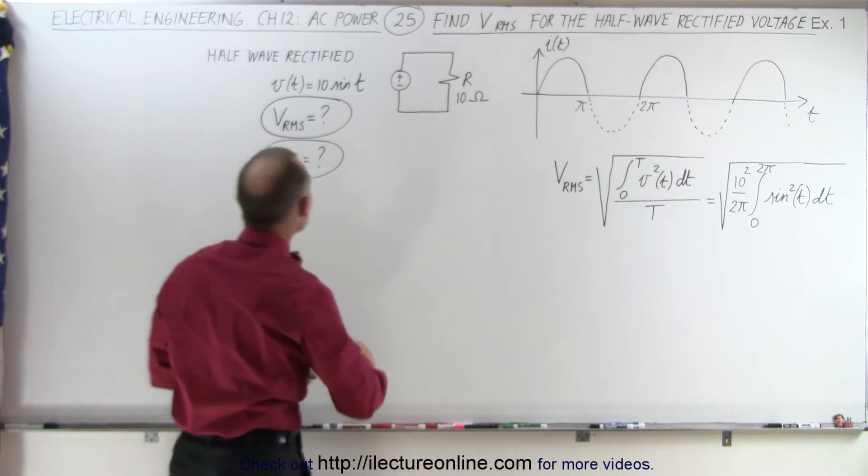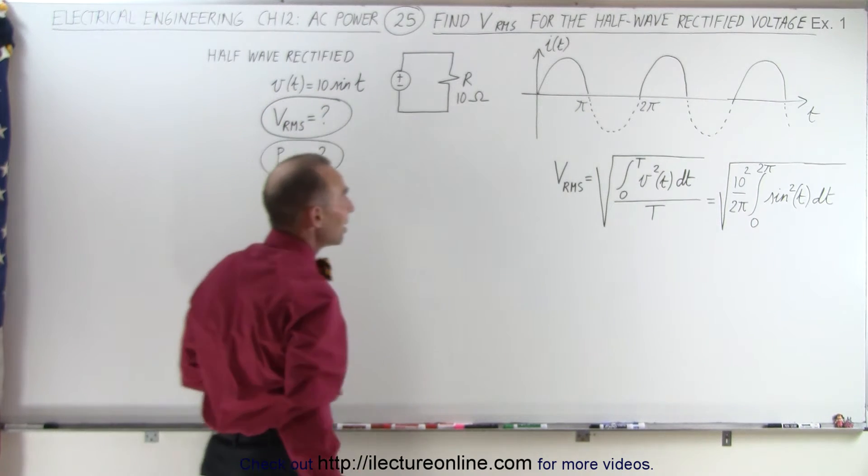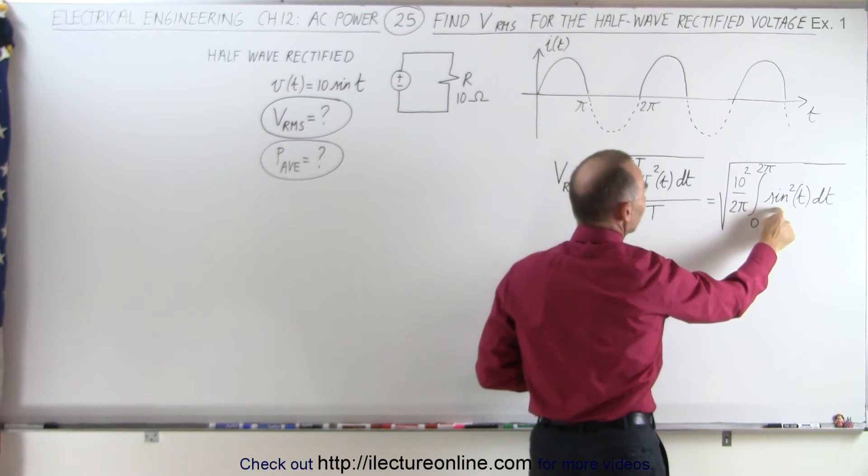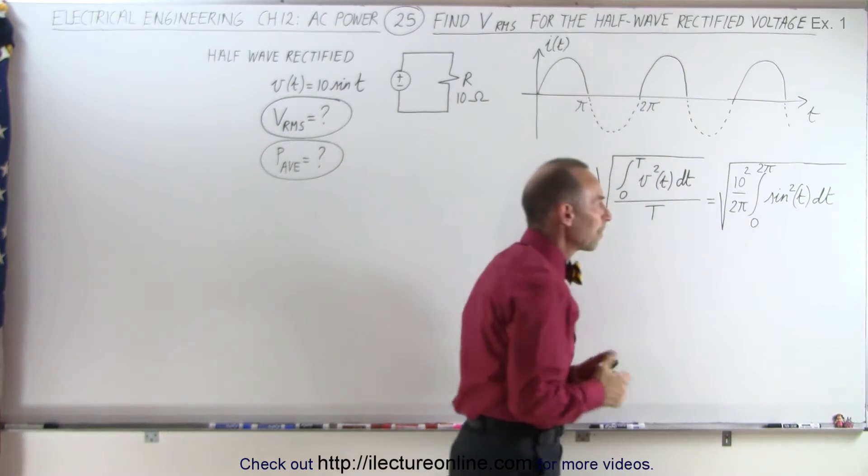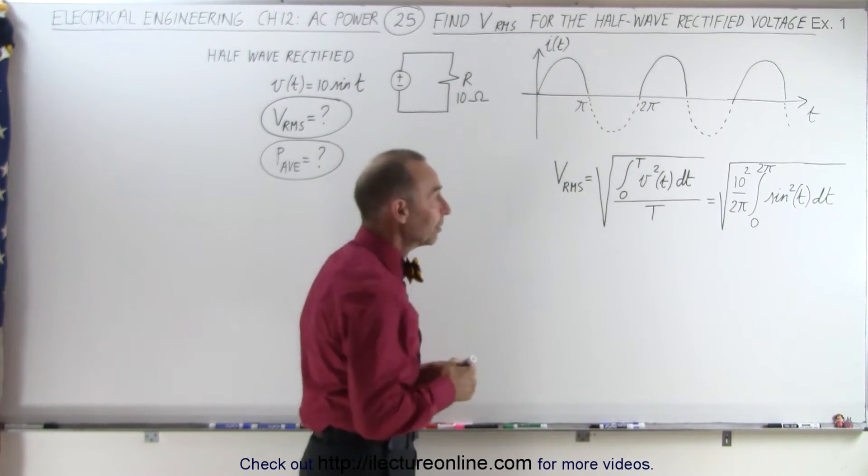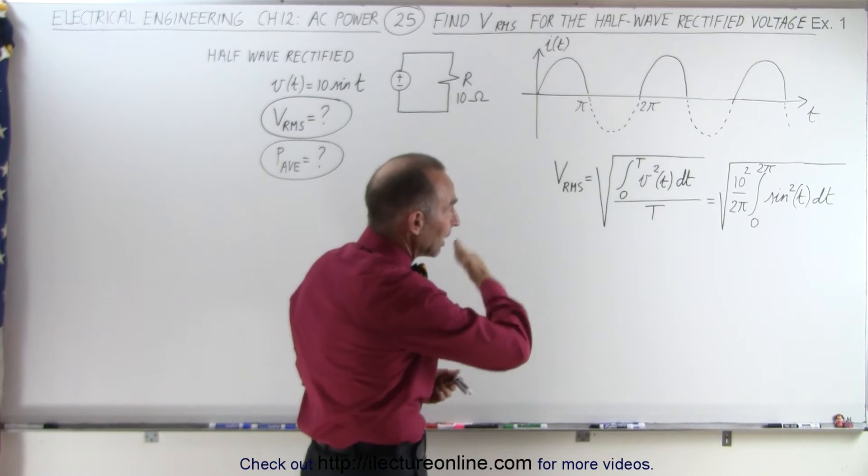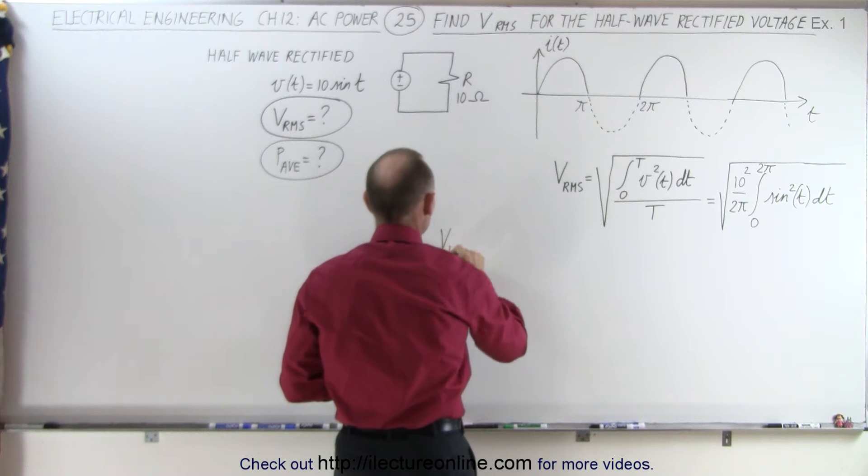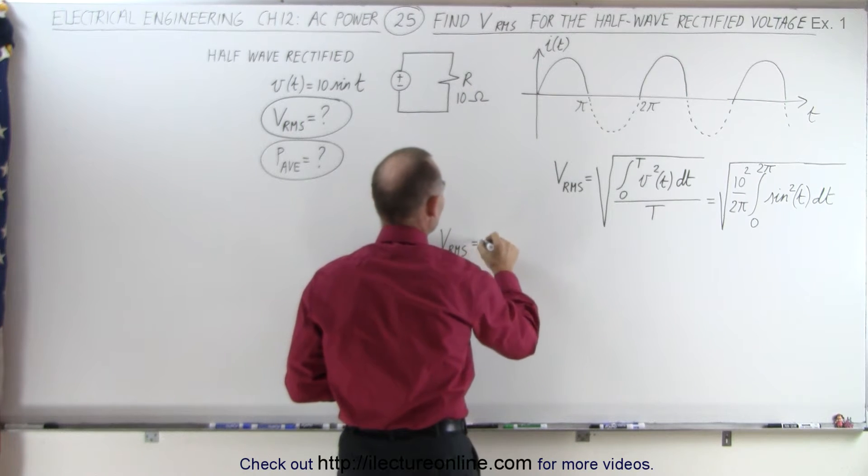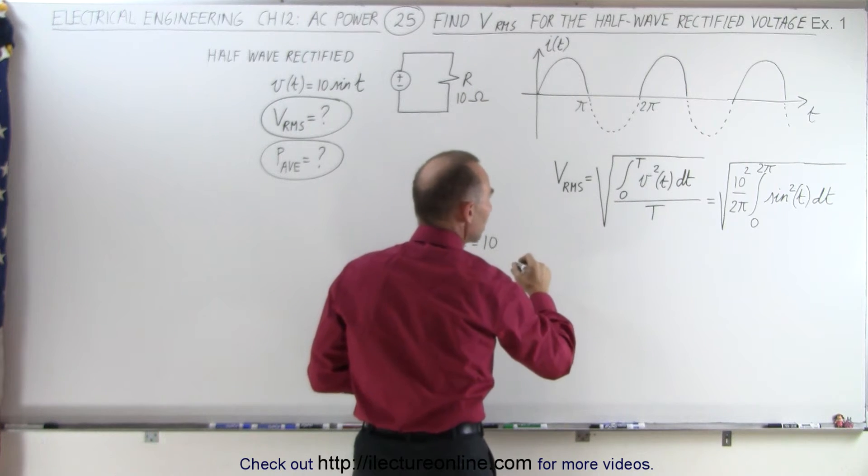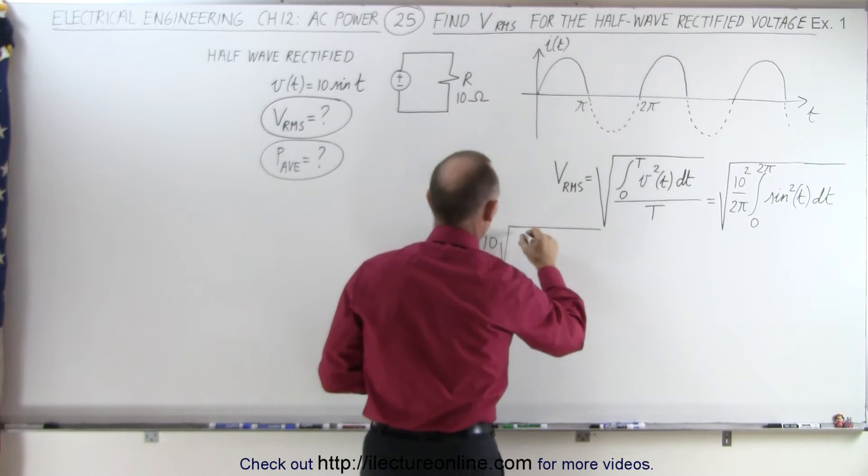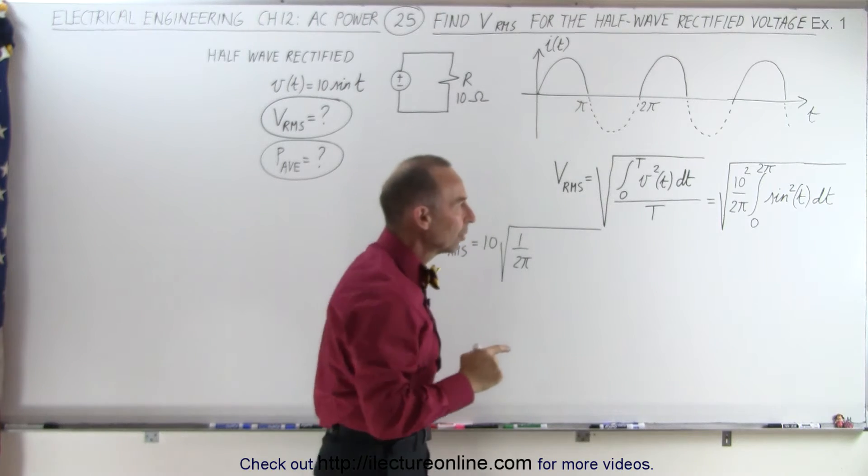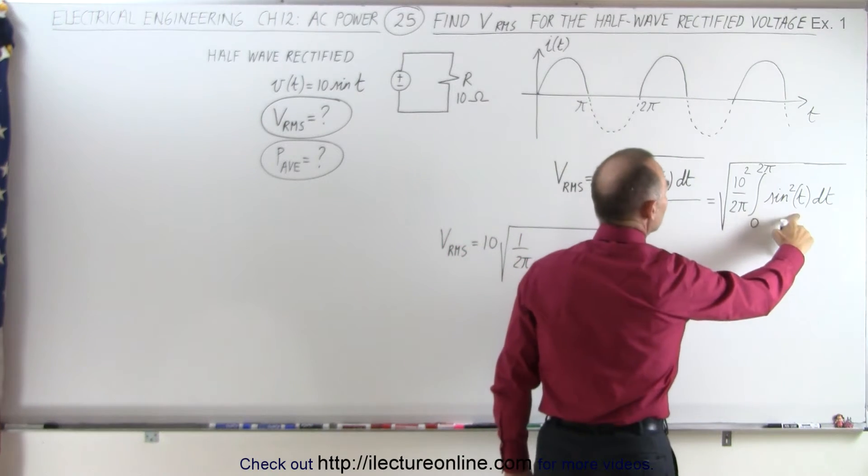And since the voltage is defined as 10 times the sine of T, 10 squared can be taken outside the integral. We have sine squared of T dt. Now how do we proceed from here? The first thing we're going to do is take the 10 squared out, so that we can say that VRMS is equal to 10 times the square root of 1 over 2π, and now we're going to integrate over the sine squared of T dt.